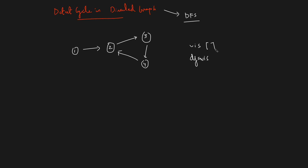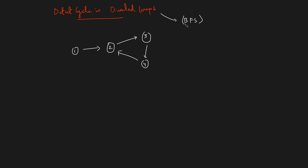Just in case you do not remember, I highly recommend that you go and watch that video, and after that you can come back and restart this video. But what if we want to do this using the BFS algorithm — the breadth-first search algorithm? The question is: can we solve this problem using the BFS algorithm? We can, using Kahn's algorithm, which was used to find the topological sort. We are going to use that algorithm to find if there is a cycle or not in a directed graph.